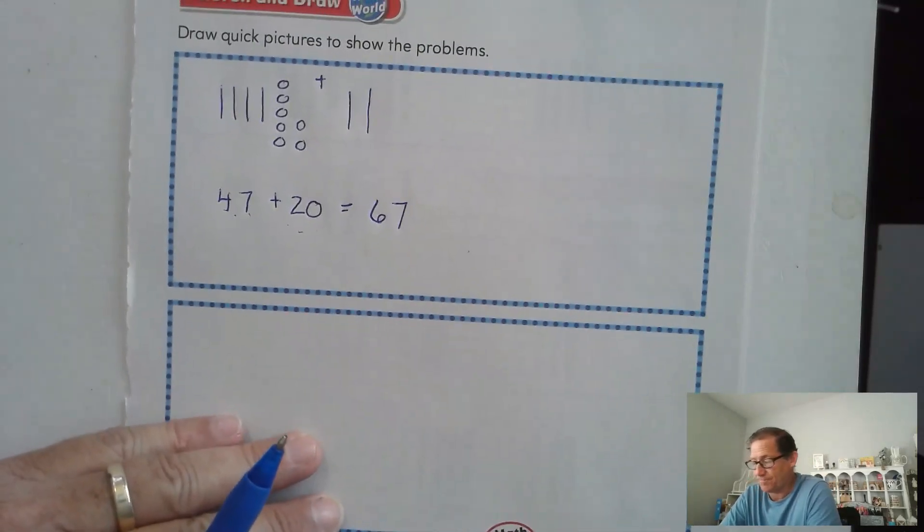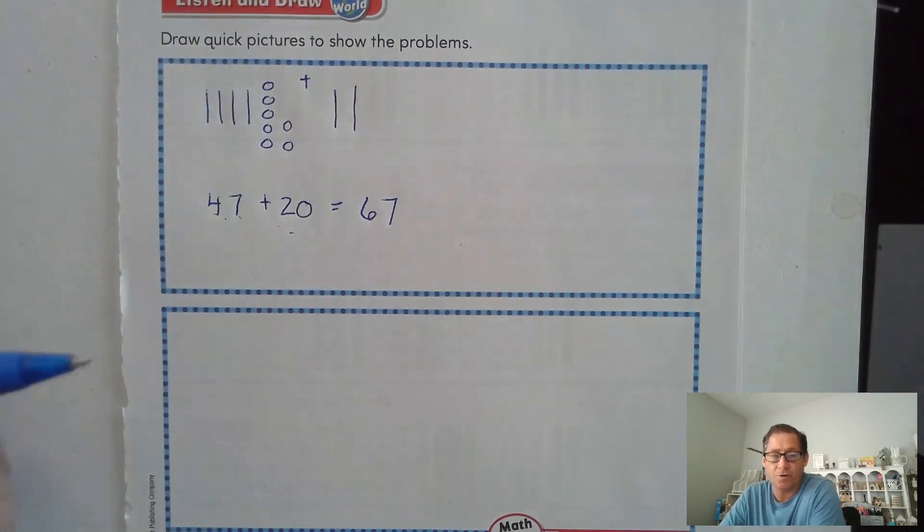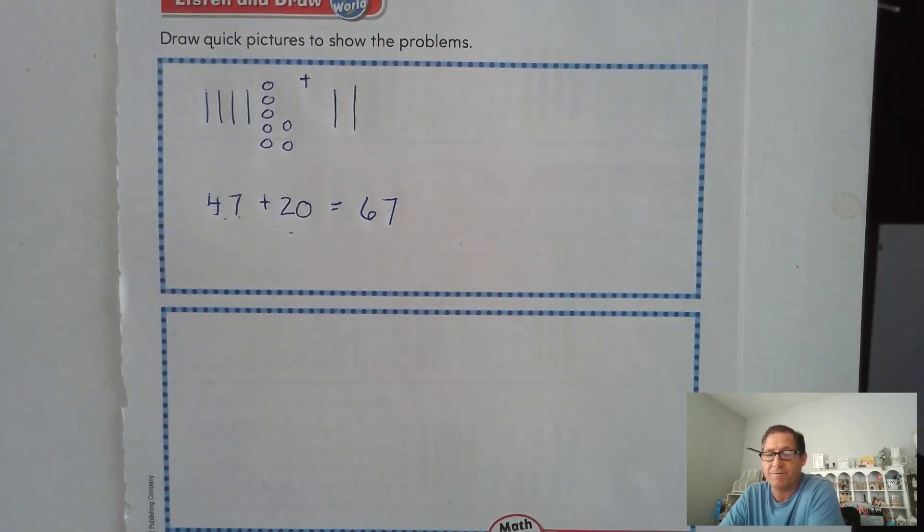Alright, listen to the next problem. Again, draw the quick picture for the problem I give you. Here's the second part. Tyrone has 30 stickers and buys 52 more stickers. How many stickers does he have now? So again, he has 30 stickers and buys 52 more stickers.